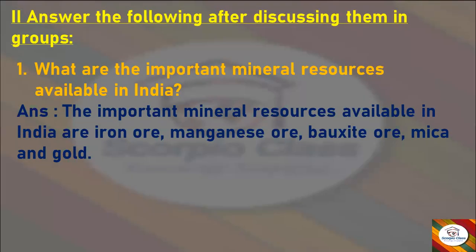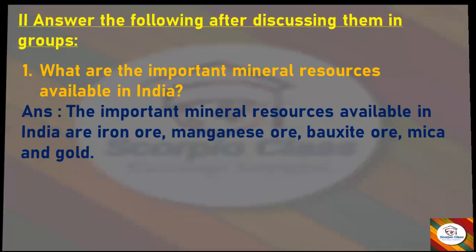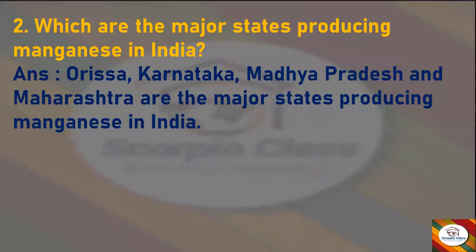Now let's move towards question and answers. The very first question: What are the important mineral resources available in India? Answer: The important mineral resources available in India are iron ore, manganese ore, bauxite ore, mica, and gold. Next question: Which are the major states producing manganese in India? Answer: Orissa, Karnataka, Madhya Pradesh, and Maharashtra are the major states producing manganese in India.